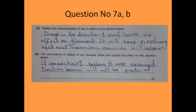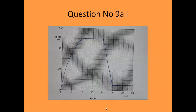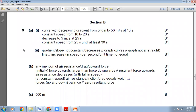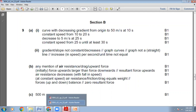Let me show you — I have already drawn it. We go to Question 9. You see here: (0,0), (10,50), (20,50), (25,5), and then a horizontal line. From 0 to 10, the acceleration was non-uniform, so we draw a curve with gradually decreasing gradient. Looking at the marking scheme: curve with decreasing gradient from origin to 50 m/s at 10 seconds; constant speed from 10 to 20 seconds; decreases to 5 m/s at 25 seconds; constant speed from 25 seconds until at least 50 seconds. Our graph is perfect.